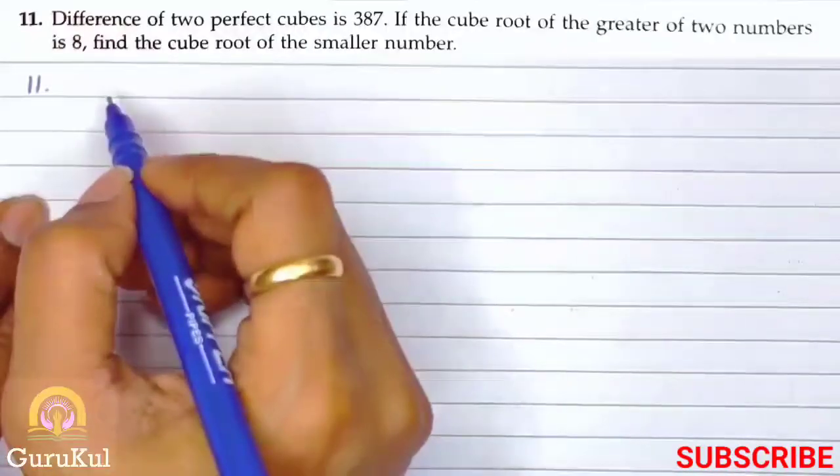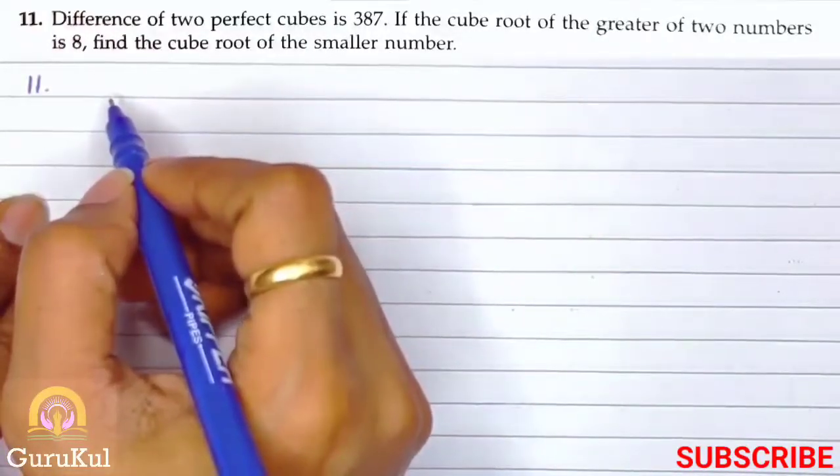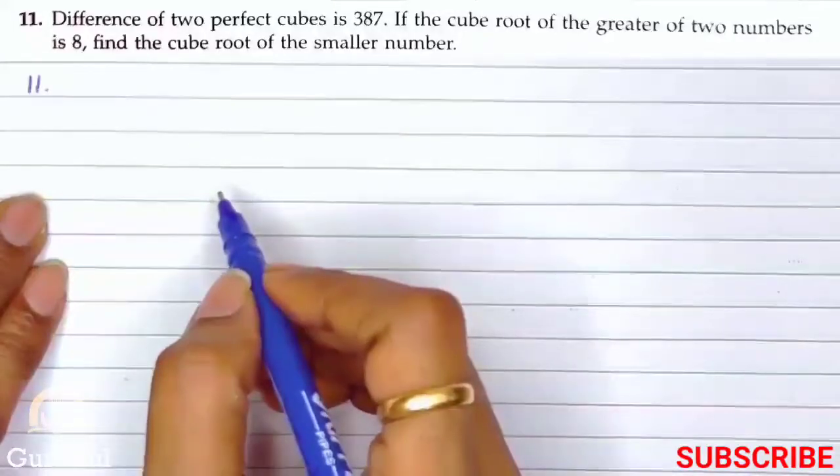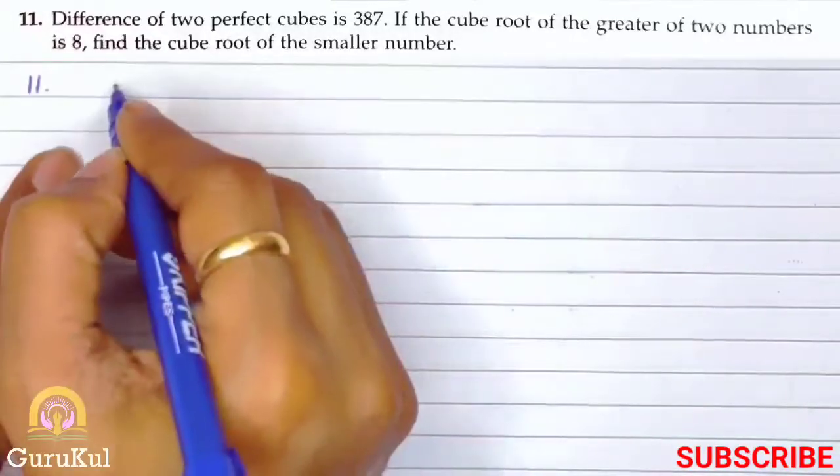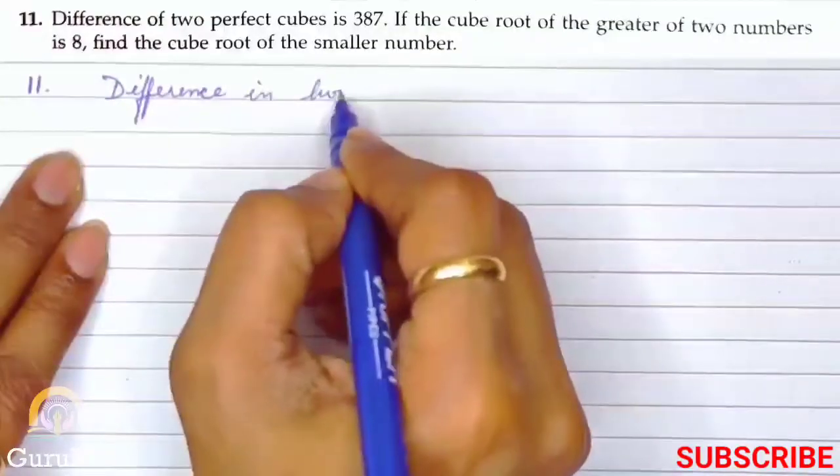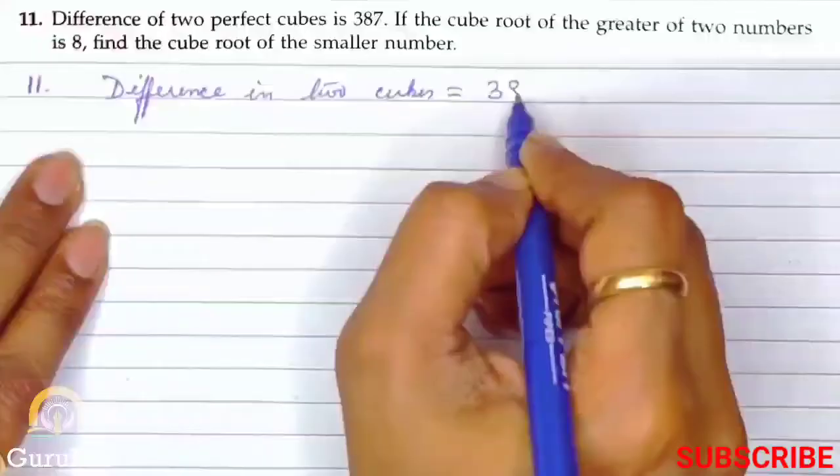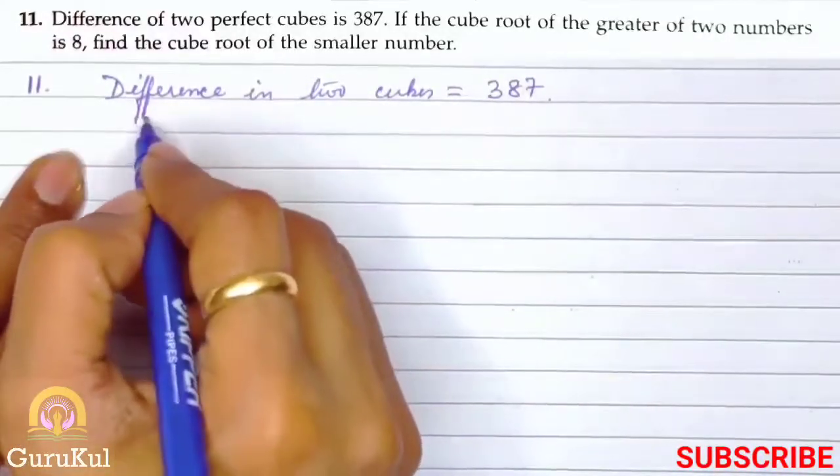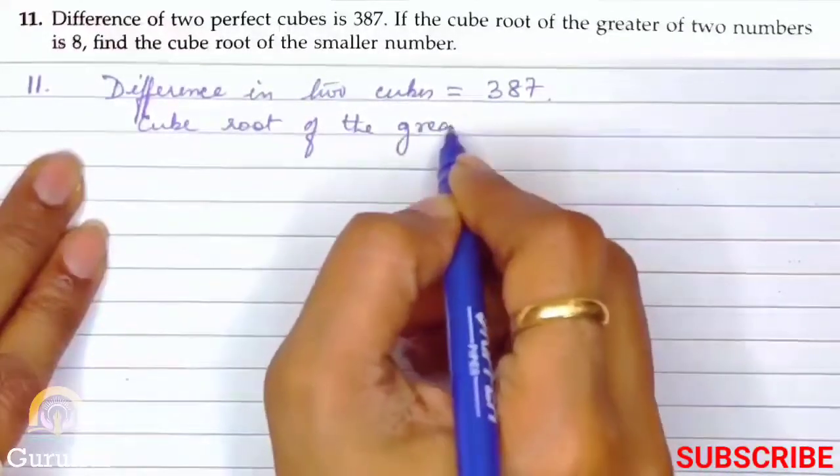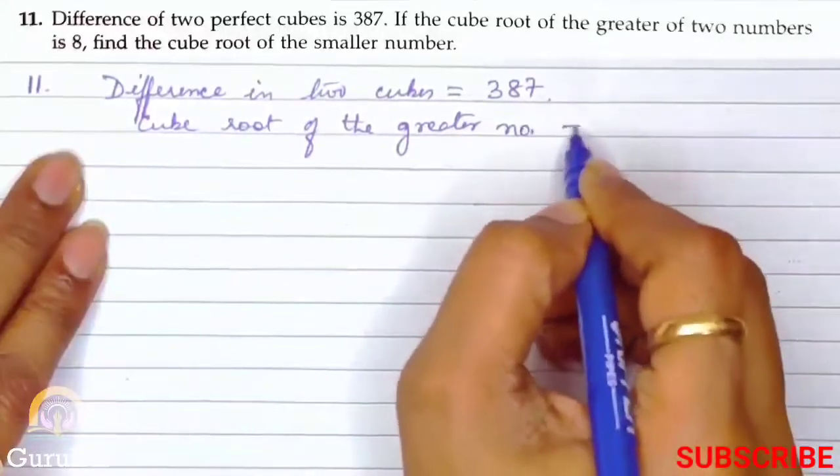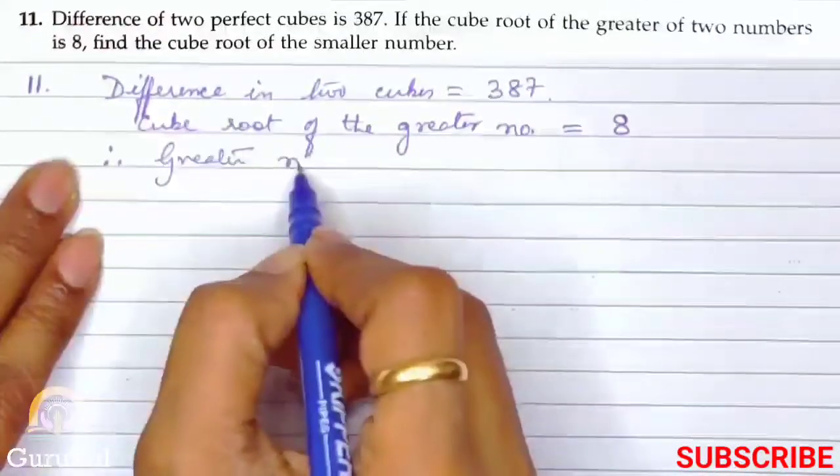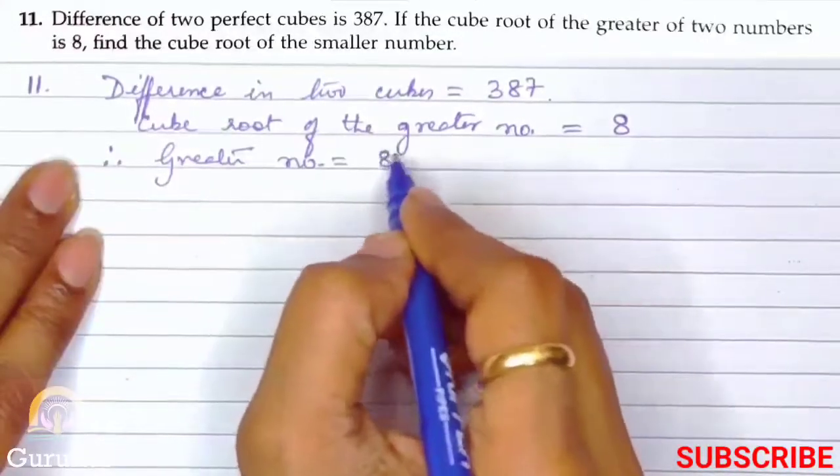Question number 11: The difference of two perfect cubes is 387. If the cube root of the greater of the two numbers is 8, find the cube root of the smaller number. First, difference in two cubes equals 387, and cube root of the greater number is 8.